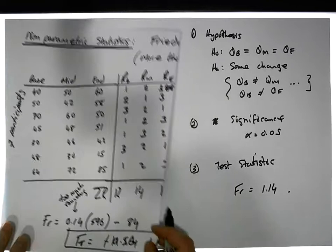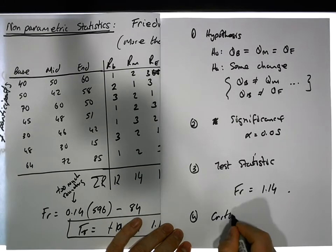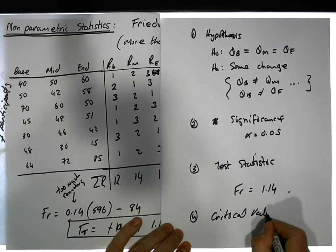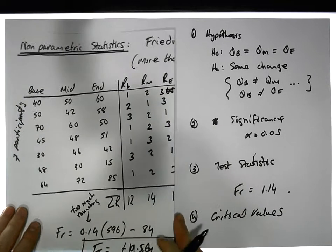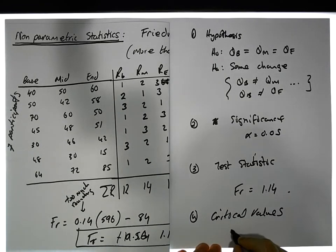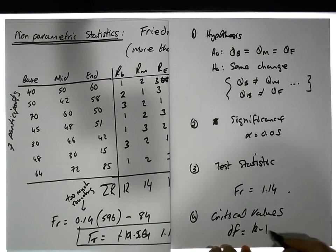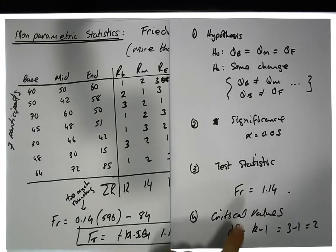Stage four: we need to get our critical values. To find the critical values, we have to look up the tables associated with the Friedman test and the F statistic. The degrees of freedom for the tables is equal to k minus 1 — that's the number of groups minus 1. In our case, it's 3 minus 1, which equals 2.